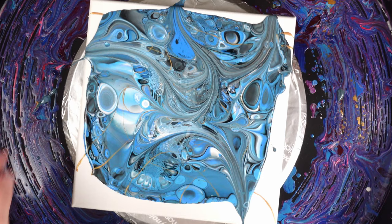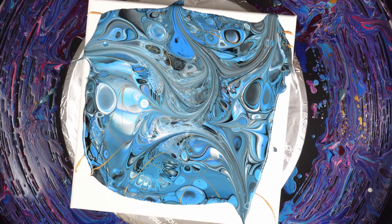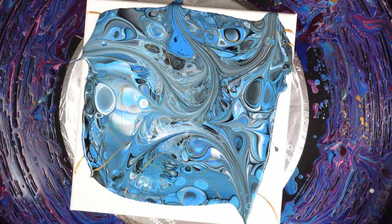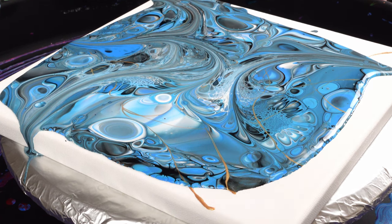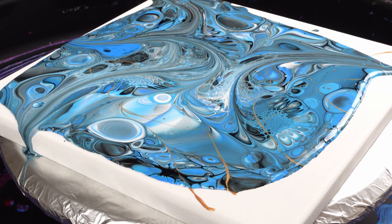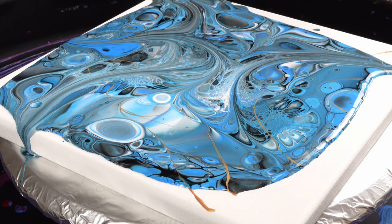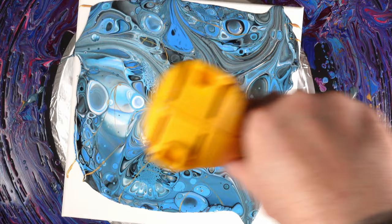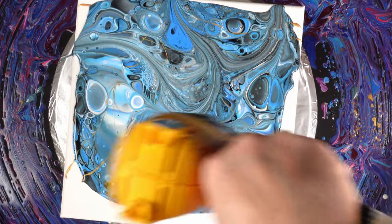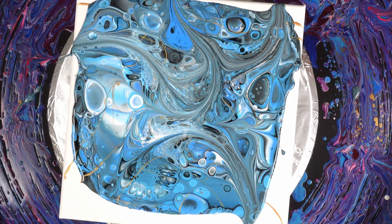Now before I stretch this one, let me give it a little bit of heat to generate any cells we can and further pop any bubbles that maybe we have missed. I like using the heat gun because it's a very gradual source of heat, so I can use it more often.